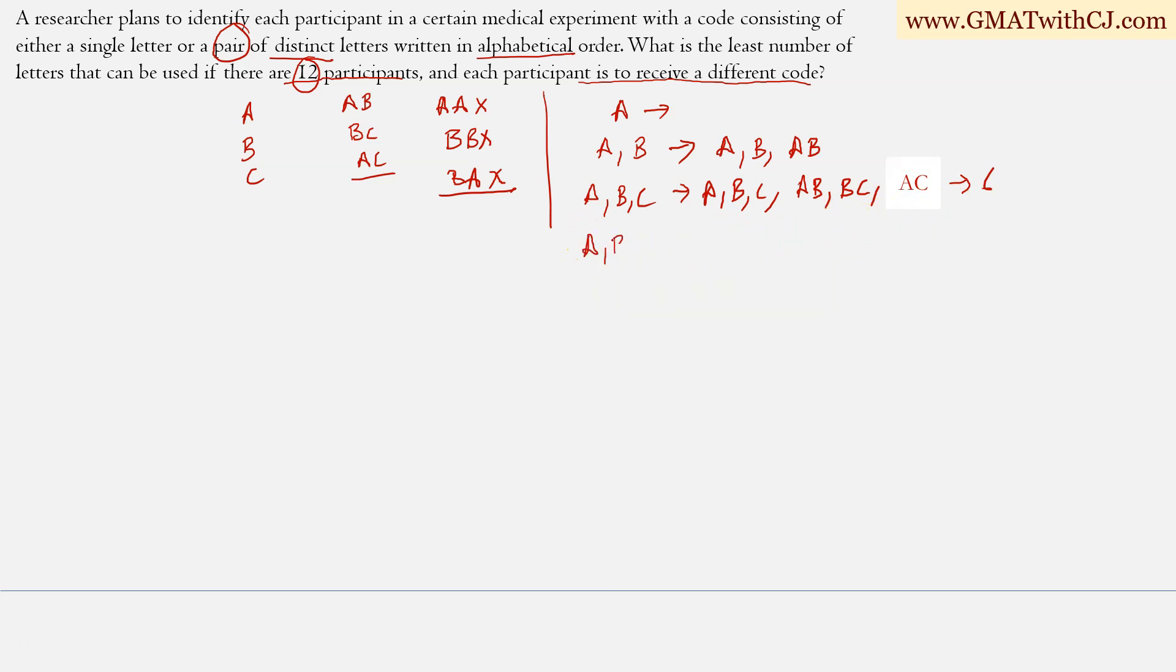Let's try four. I may be able to get 12. Let's see A, B, C, D first of all. Then A, B, A, C, A, D, B, C, B, D and C, D.